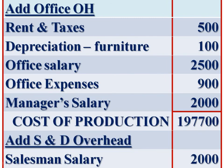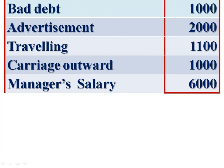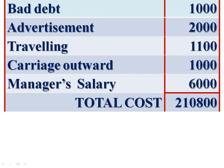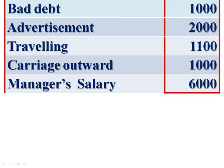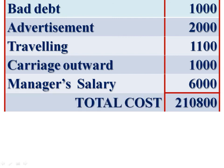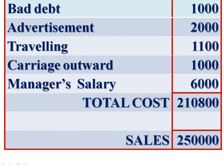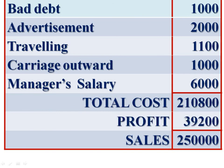Add selling and distribution overhead: salesman's salary Rs 2,000, bad debt Rs 1,000, advertisement Rs 2,000, travelling expense Rs 1,100, carriage outward Rs 1,000, and manager's salary Rs 6,000. We get total cost of Rs 2,10,800. We are given sales of Rs 2,50,000. The difference between total cost and sales, being profit, is Rs 39,200. This is the cost sheet.